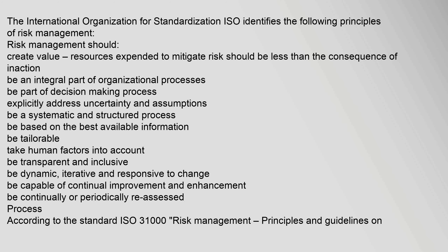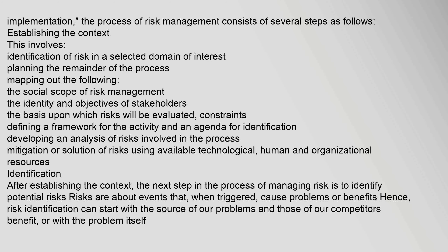Risk management should also be capable of continual improvement and enhancement and be continually or periodically reassessed. According to the standard ISO 31000 risk management principles and guidelines on implementation, the process of risk management consists of several steps, beginning with establishing the context. This involves identification of risk in a selected domain of interest, planning the remainder of the process, mapping out the social scope of risk management, the identity and objectives of stakeholders, and the basis upon which risks will be evaluated.